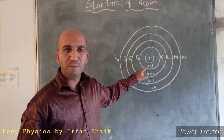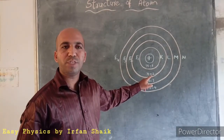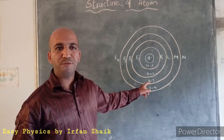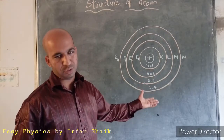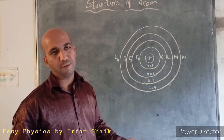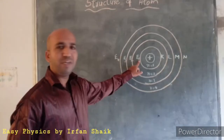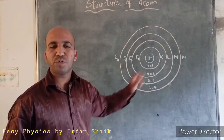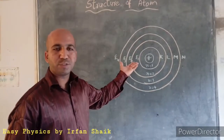These orbits can also be named using quantum numbers: n=1 denotes the first shell, n=2 denotes the second shell, n=3 denotes the third shell, n=4 denotes the fourth shell, and n=5 would denote the fifth shell.